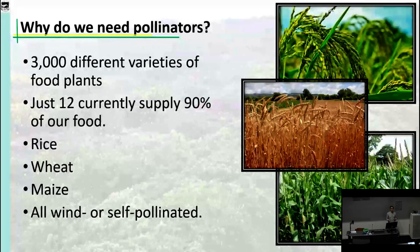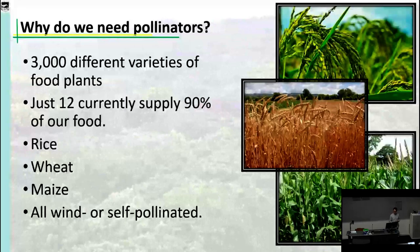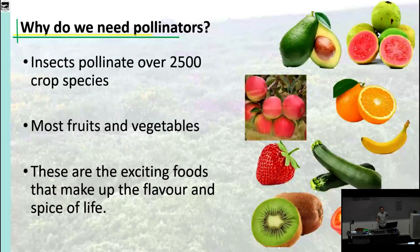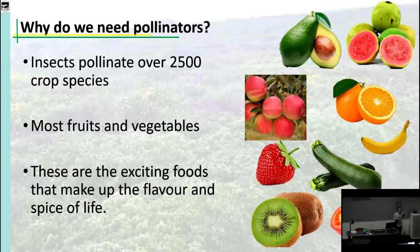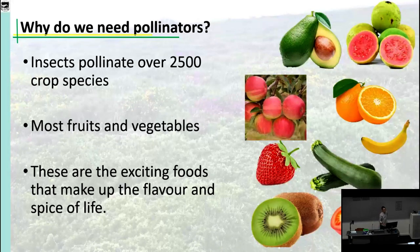So if we run out of bees, strangely, we will still be able to feed ourselves. We'll be able to feed ourselves rice, bread, and corn, and it will be fine. The problem is that it will be fine, and that's it. We consume 90% of our food from about 12 main wind-pollinated food sources. That other 10% is all insect- or animal-pollinated, and it's all the stuff that has flavor — all the fruits, spices, vegetables, all the good stuff.